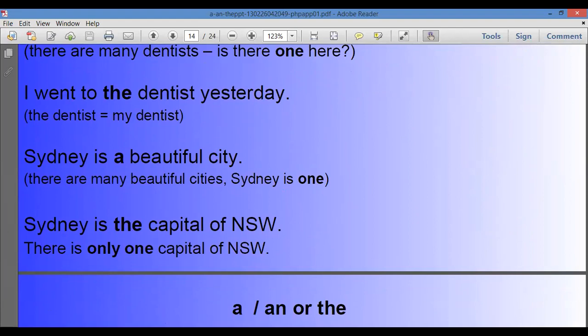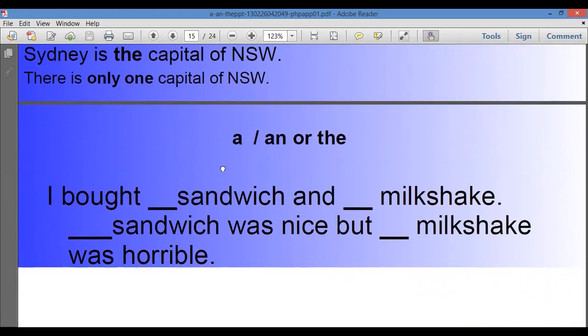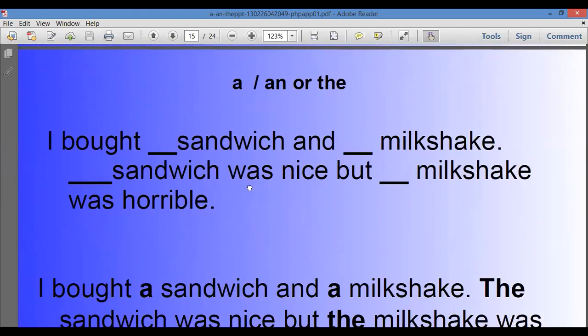Sydney is the capital of New Zealand. There is only one capital of New Zealand. So you understood that we use the with the things that are specific or are one. I bought a sandwich and a milkshake. The sandwich was nice, but the milkshake was horrible.